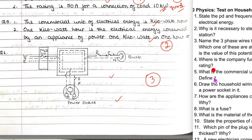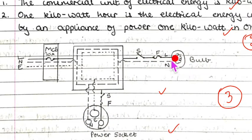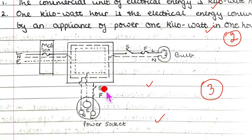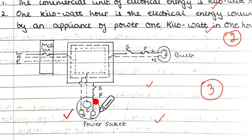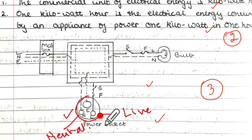Question six: Draw the household wiring system with the bulb and the power socket. This is a three mark question. Draw the ring system showing the live, neutral, and earth with different lines. The bulb is connected for each socket. Remember to show the switch and the fuse for each one. For the socket, the earth cylinder has to be visibly shown as the largest, with the live on the right and the neutral on the left.